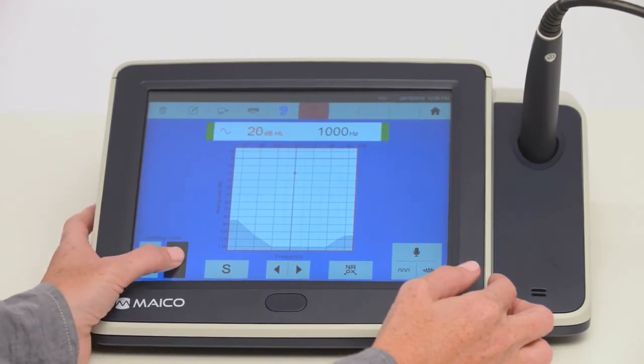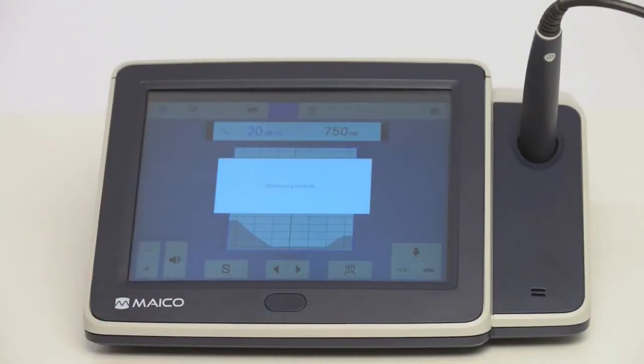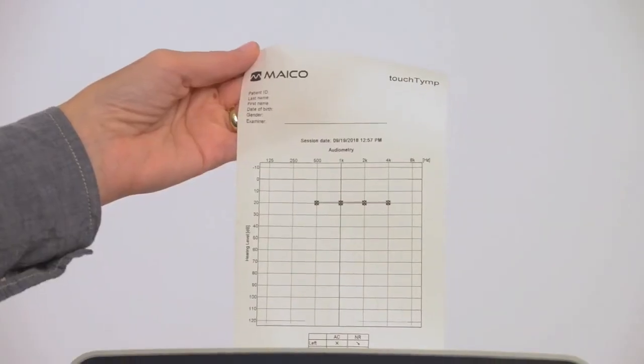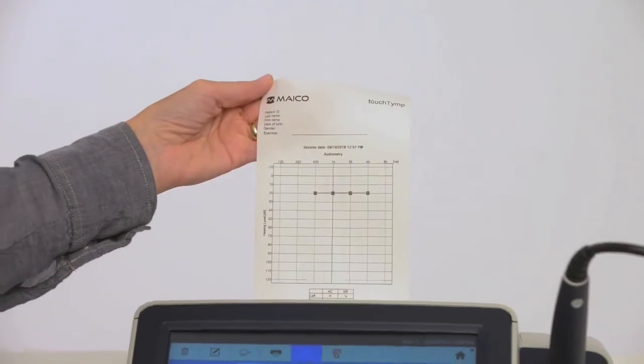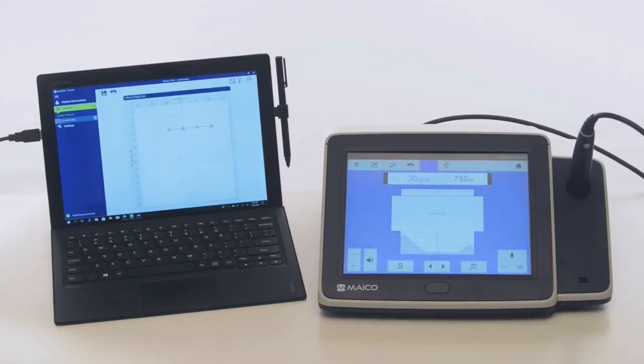Results can be stored on the device by pressing the S button. Final testing results can be printed by selecting the print button or transfer to a PC by pressing the transfer button. Transfer requires the TouchTimp be connected to a PC and the Mako software open.